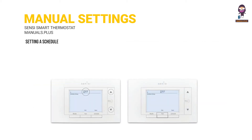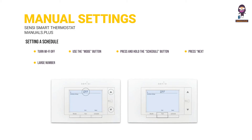Setting a schedule: turn WiFi off (refer to the turn WiFi off section). Use the mode button to set which type of schedule it will be — heat or cool. Press and hold the schedule button until you see the time flash at the top of the screen; adjust the time if needed using the up and down arrow buttons, then press next. You will see a large number in the middle of the screen — this refers to your set point. The time will be flashing at the top; adjust the time of the first set point using the up and down arrow buttons, press next. The set point will be flashing; adjust it using the up and down arrow buttons, then press next. Repeat these steps for the second, third, and fourth set points. Press exit, and make sure schedule is set to on on the thermostat.